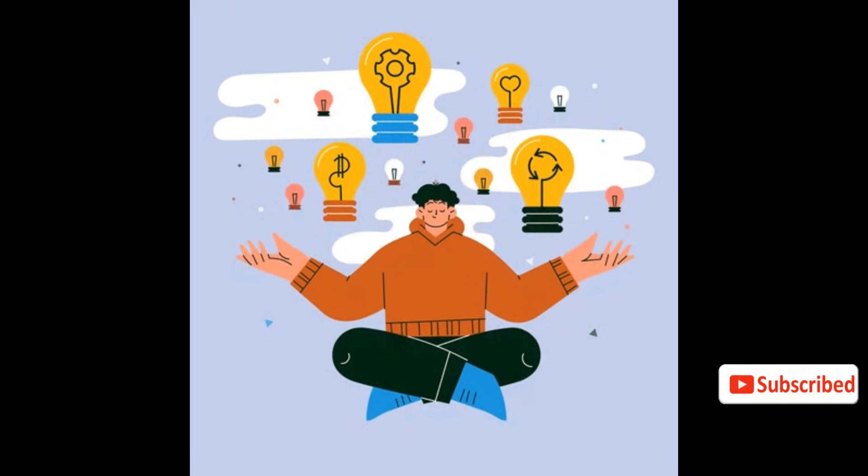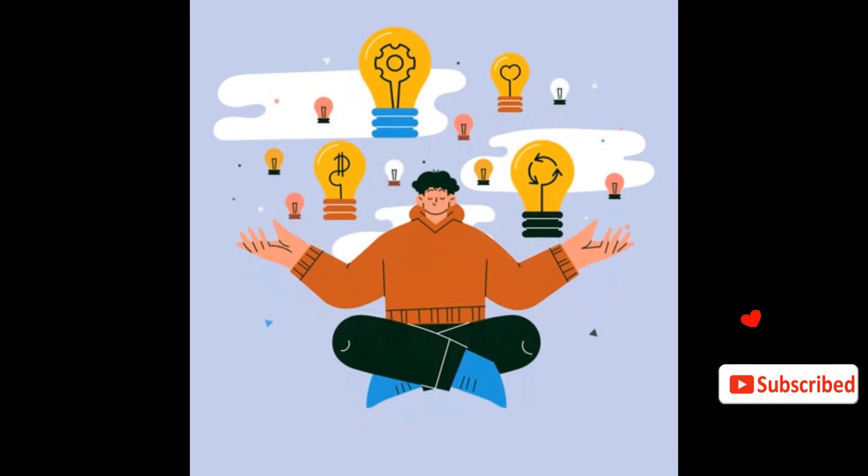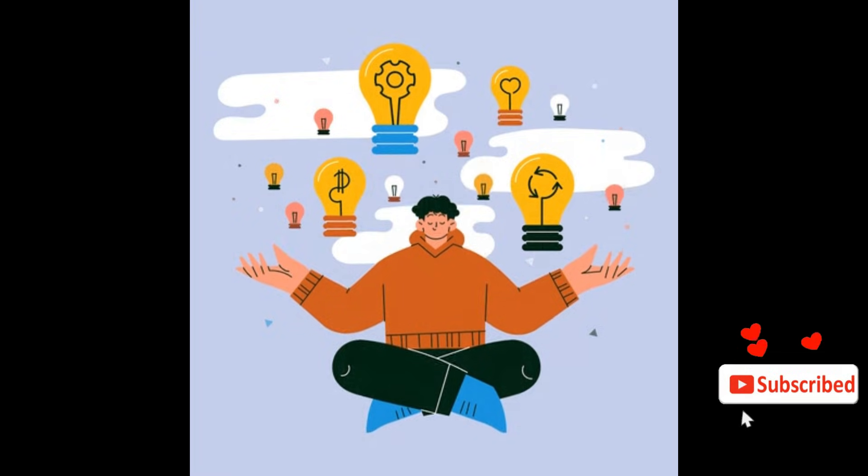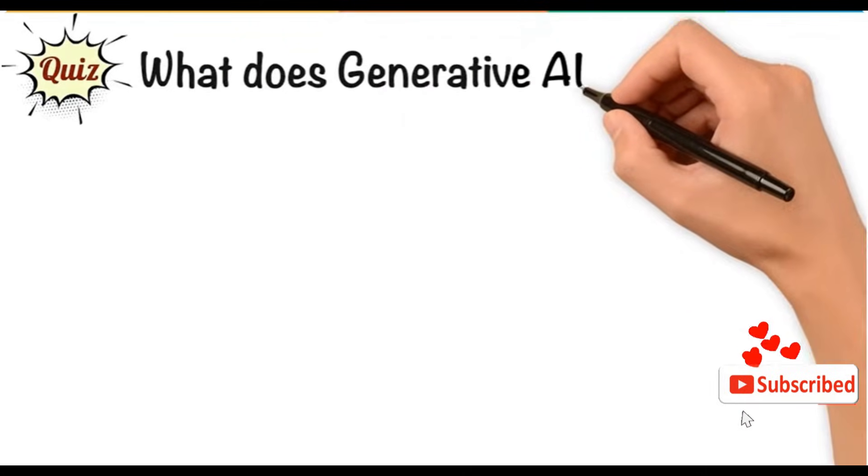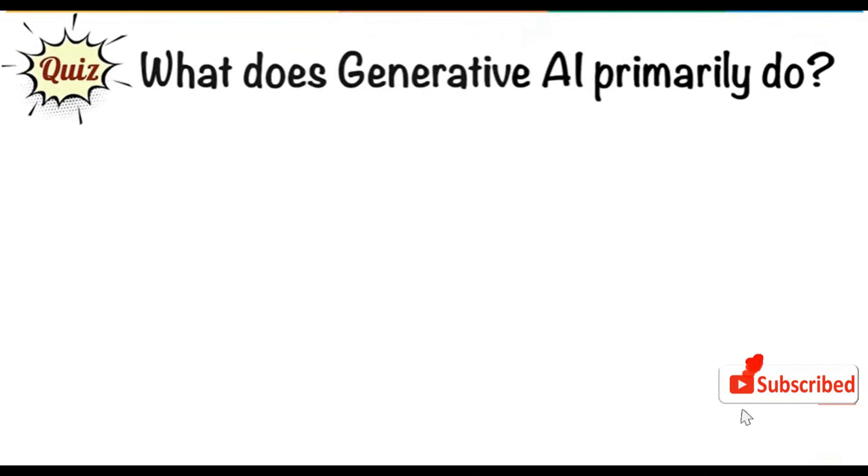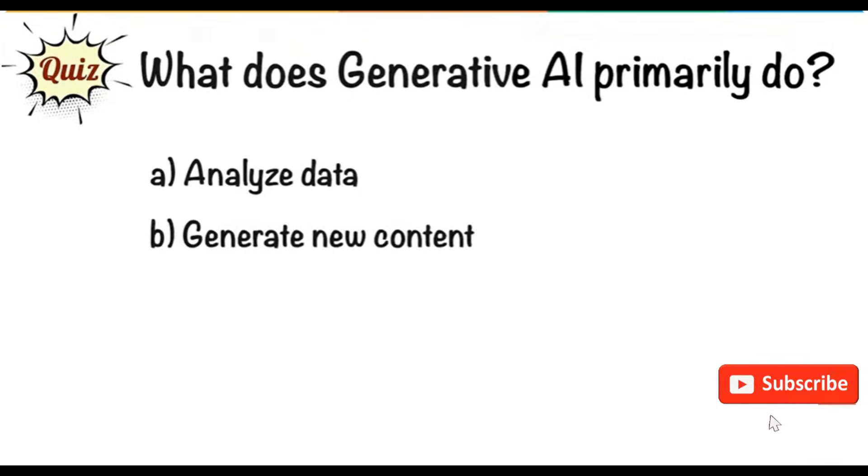That's the basics of Generative AI. Now it's time for a one-question quiz on what we have learned so far. What does Generative AI primarily do? A: Analyze data. B: Generate new content. And C: Store data.